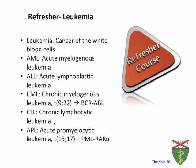Let's start with a refresher. Leukemia is cancer of the white blood cells. We have different kinds of leukemia: AML, ALL, CML, CLL. There are acute leukemias — AML and ALL — and there are chronic leukemias — CML and CLL.